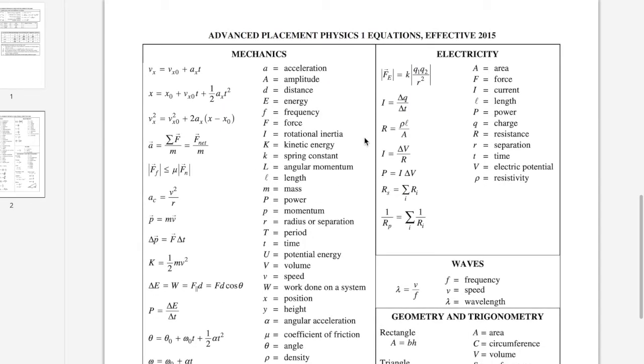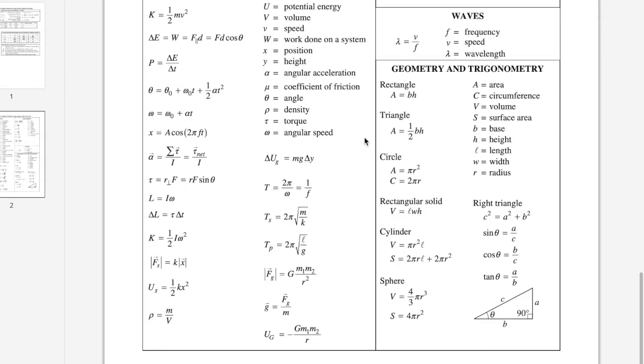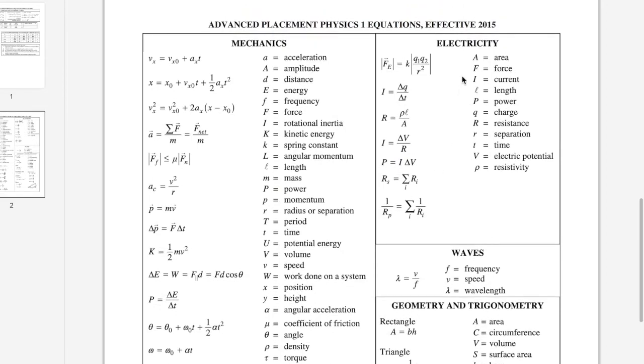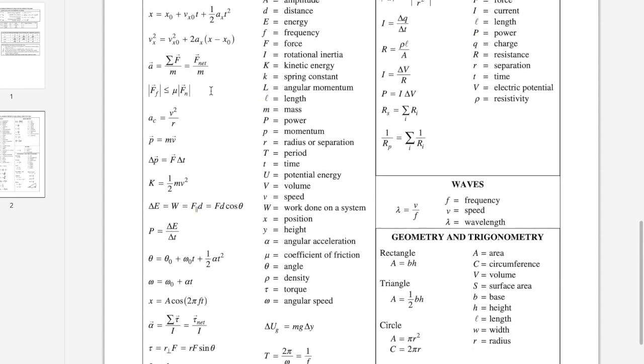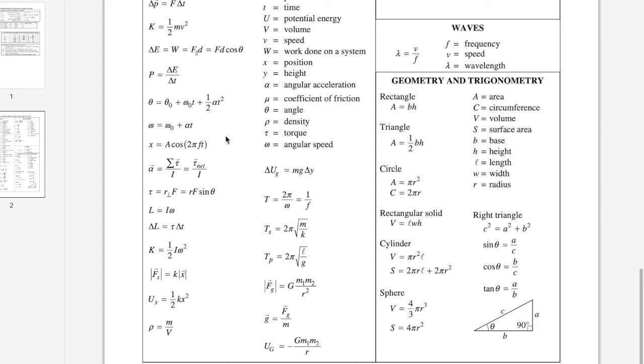Finally, we have the equation sheet. This might look overwhelming at first, but geometry and trigonometry, you probably are very familiar with all of this already. They're here for your reference. Waves really only has one equation. Electricity, we'll learn these and they'll actually be very straightforward once we do. But most of these mechanics equations are going to be very interconnected. And so when you first look at this, this feels really overwhelming. But once you start to learn some of these, you'll see, oh, wait a minute.